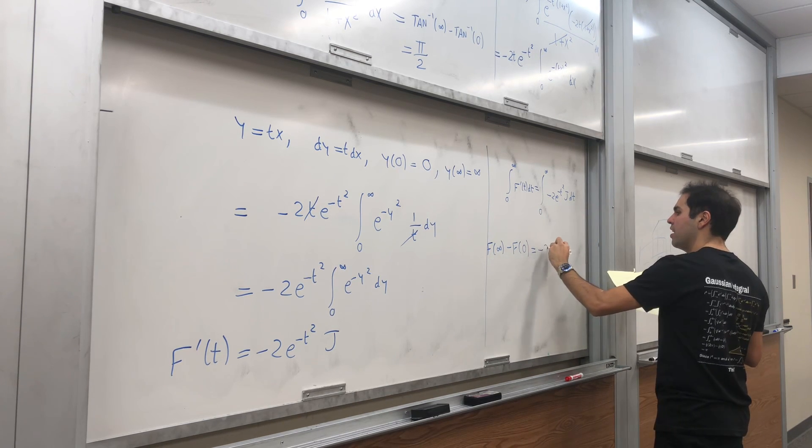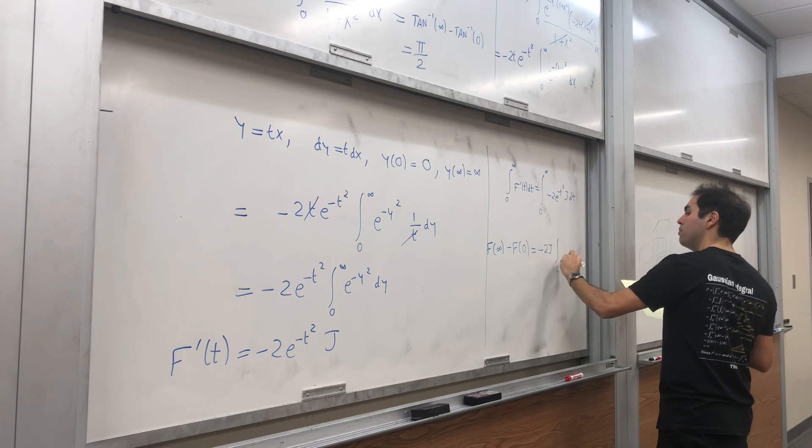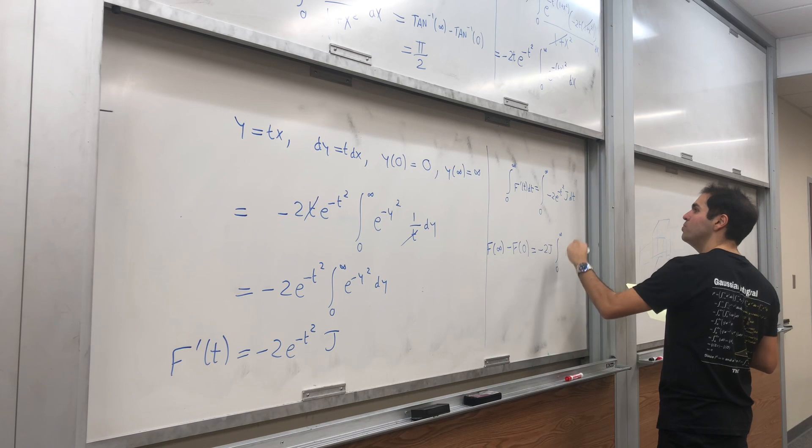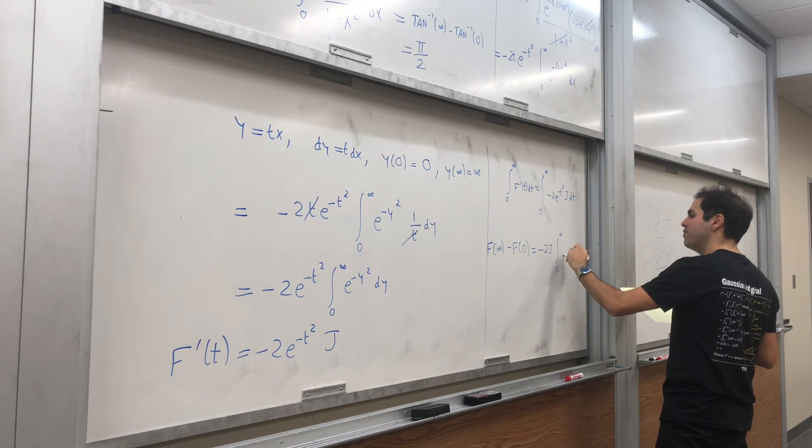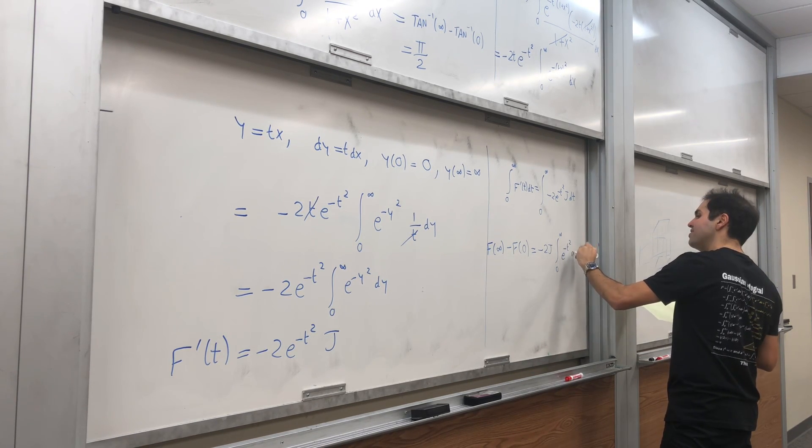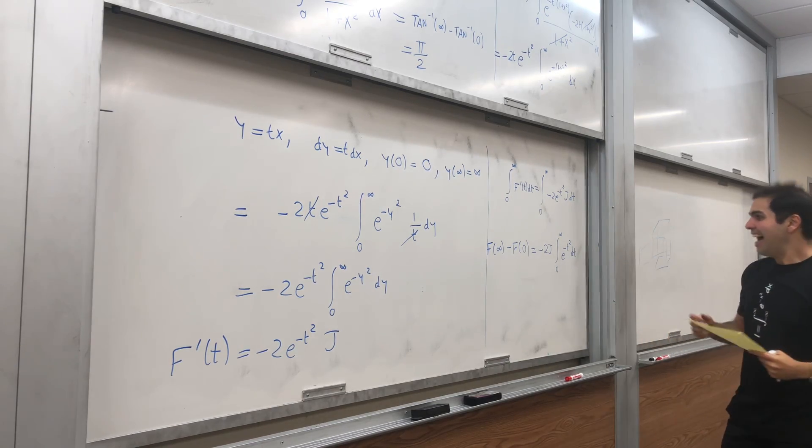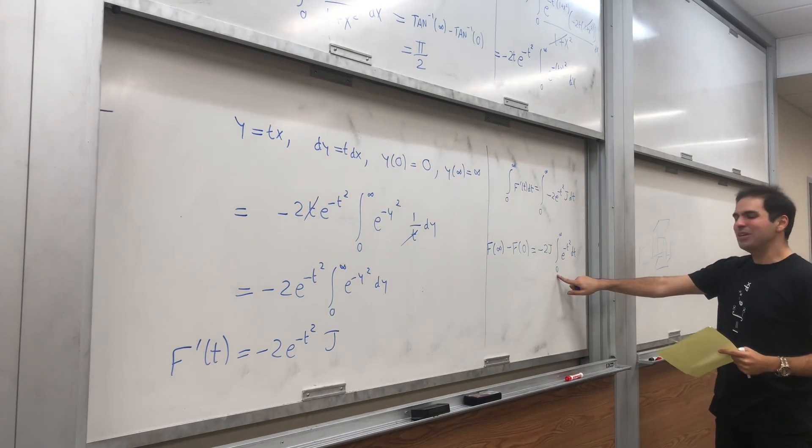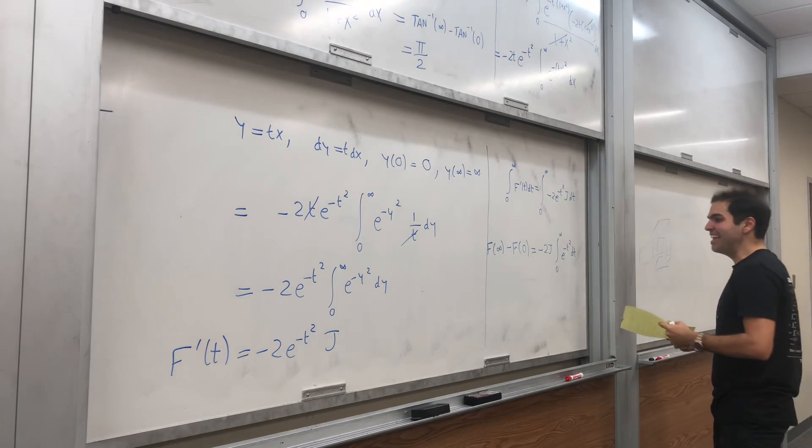Minus two J comes out, and we get minus two J times integral from zero to infinity of e of minus t squared dt. And lo and behold, this is so beautiful, J appears again.